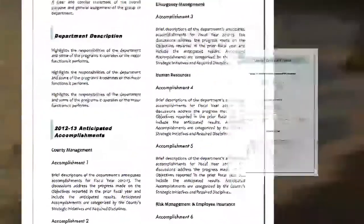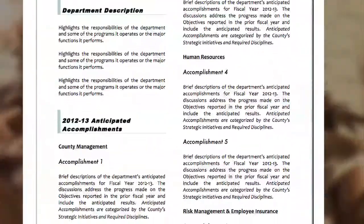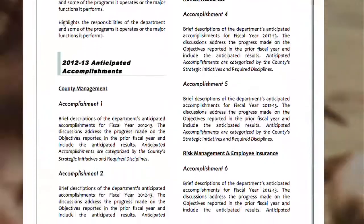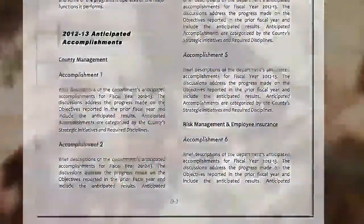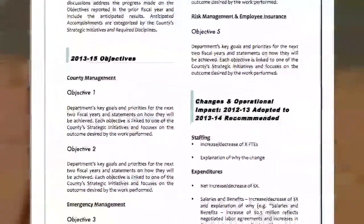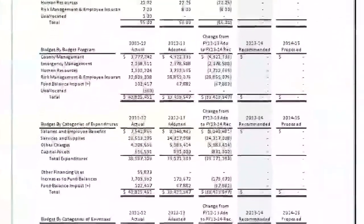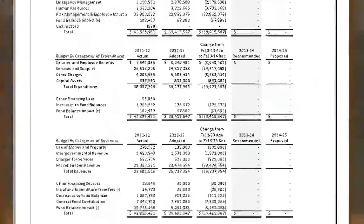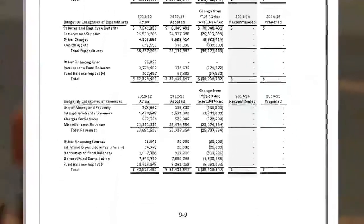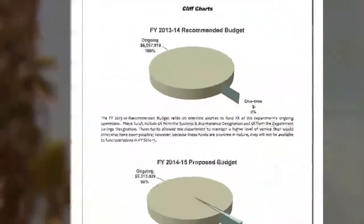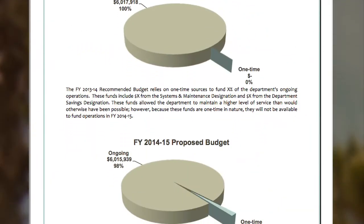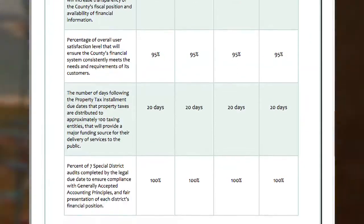This year, for example, we've changed the budget book's orientation to make it easier to read. We've decreased the details on how divisions operate and added information that shows how departments use your money effectively and efficiently. We replaced a book encumbered with statistics with one that focuses on delivering the highest quality information for the public and policymakers.